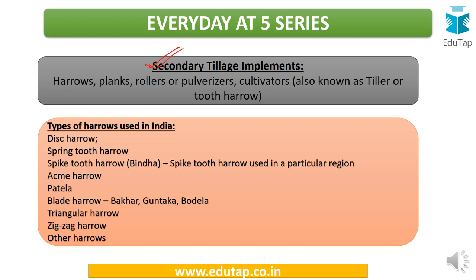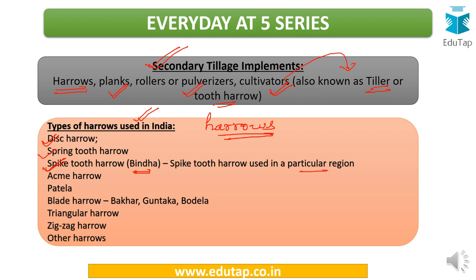Moving ahead, the names of the secondary tillage implements: there are harrows, planks, rollers or pulverizers, and cultivators — these cultivators are also known as tillers or tooth harrows. There are various types of secondary tillage implements used in India. The types of harrows include: disc harrow, which is very popular; spring tooth harrow; spike tooth harrow; and an implement called binda, which is a spike tooth harrow made from local material. There is also acme harrow, patela, and blade harrows. The examples of blade harrows are bakhar, guntaka, and bodela.